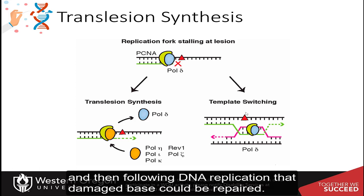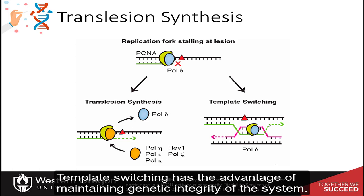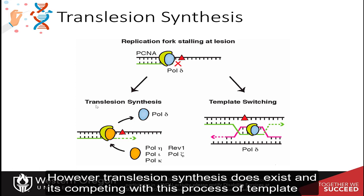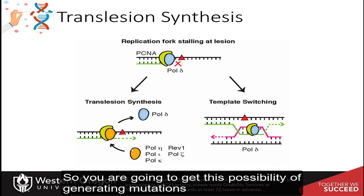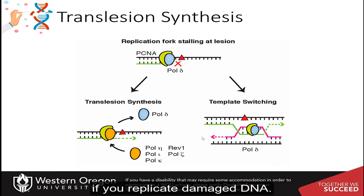And then following DNA replication, that damaged base could be repaired. Template switching has the advantage of maintaining genetic integrity of the system. However, translesion synthesis does exist and it's competing with this process of template switching to replicate around DNA damaged sites. So you are going to get this possibility of generating mutations if you replicate damaged DNA.